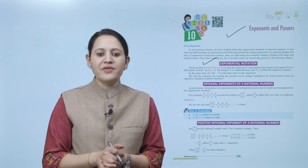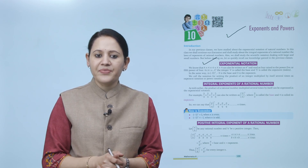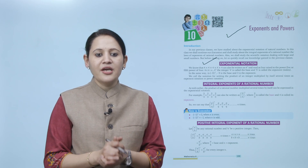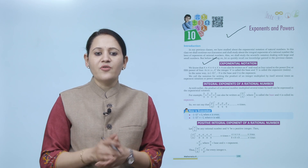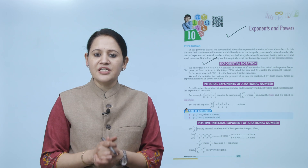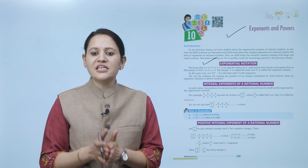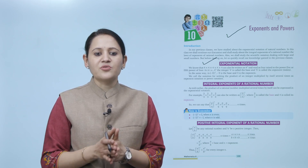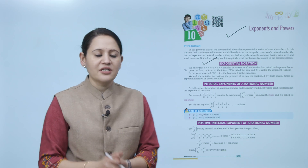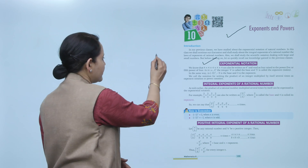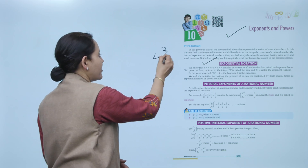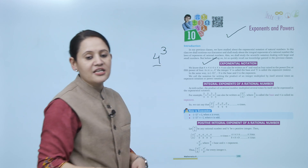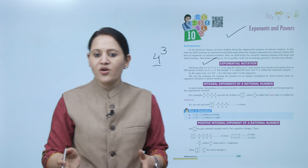Similarly, in (-9) to the power 3, here -9 is the base and 3 is the exponent. We call this notation for writing the product of an integer multiplied by itself several times the exponential or power notation. For example, in 4 to the power 3, here 4 is the base and 3 is the power or exponent.